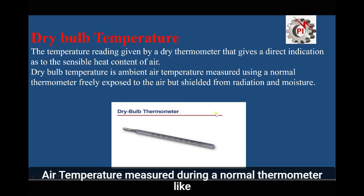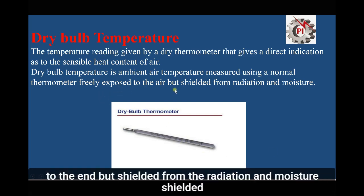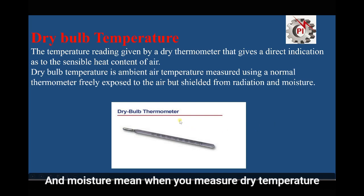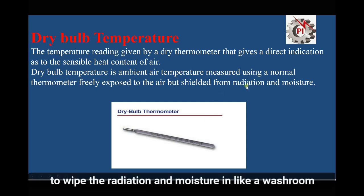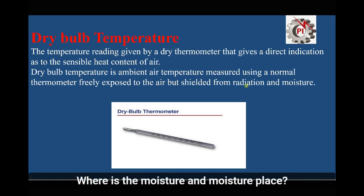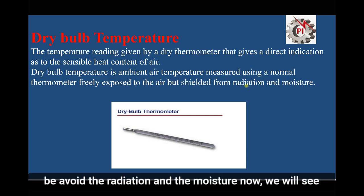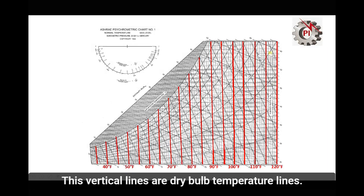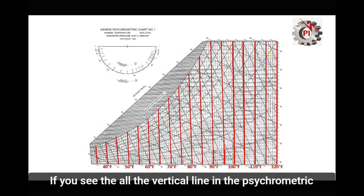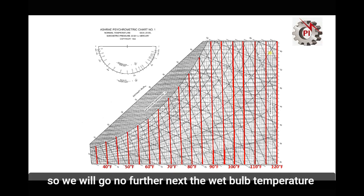Dry bulb temperature is the ambient air temperature measured by a normal thermometer freely exposed to the air but shielded from radiation and moisture. When measuring dry bulb temperature, your thermometer should not be near a fireplace to avoid radiation, and not in a high-moisture place like a washroom. In the psychrometric chart, the vertical lines are the dry bulb temperature lines.